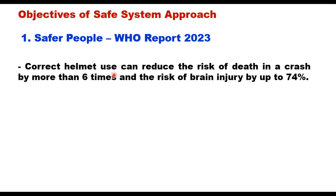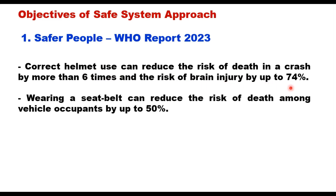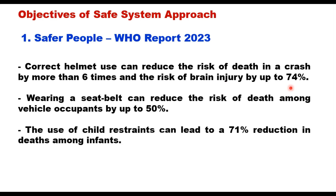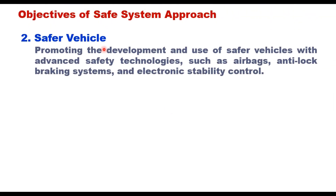A WHO report of 2023 concludes that correct helmet use can reduce the risk of death in a crash by more than six times and the risk of brain injury by up to 74 percent. Wearing a seat belt can reduce the risk of death among vehicle occupants by up to 50 percent, and the use of child restraints can lead to a 71 percent reduction in death among infants.